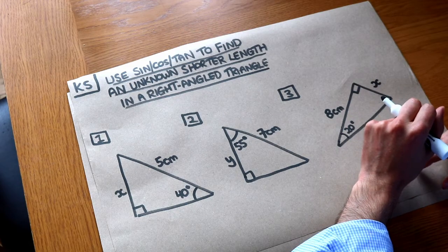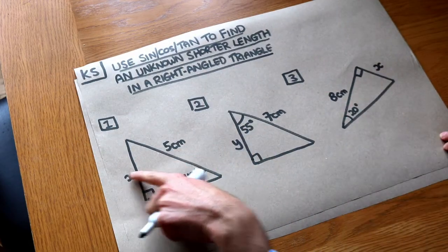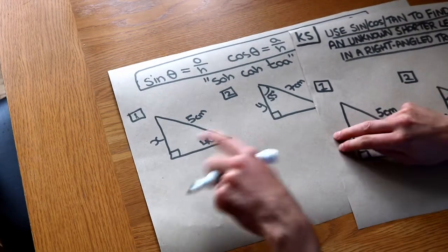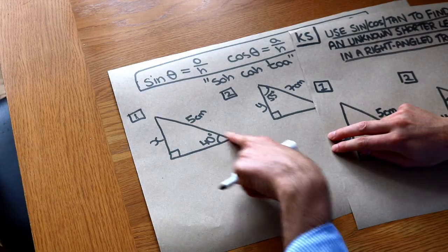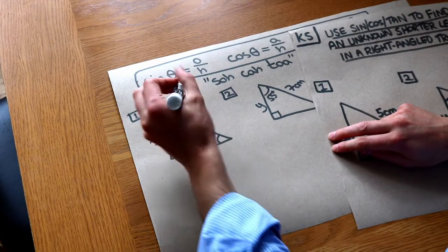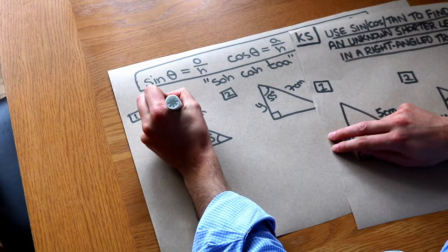In the previous video we saw how we could label these sides of a right-angled triangle. Now I've made a copy of these over here. Do you remember that the longest side of the right-angled triangle is known as the hypotenuse? It's always opposite that right angle. So let's label that with an H and a circle.